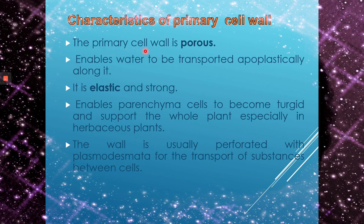The primary cell wall is porous, enabling water to be transported apoplastically along it. It is elastic and strong, enabling parenchyma cells to become rigid and support the whole plant, especially in herbaceous plants. The wall is usually perforated with plasmodesmata for transport of substances between cells.